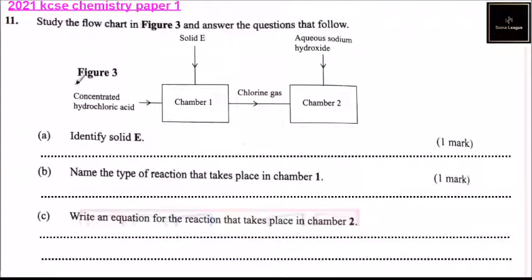Question number 11. Study the flowchart in Figure 3 and answer the questions that follow. So this is our Figure 3. We have concentrated hydrochloric acid get into chamber 1. Solid E is added. Chlorine gas is added. Then in chamber 2, aqueous sodium hydroxide is added in chamber 2.